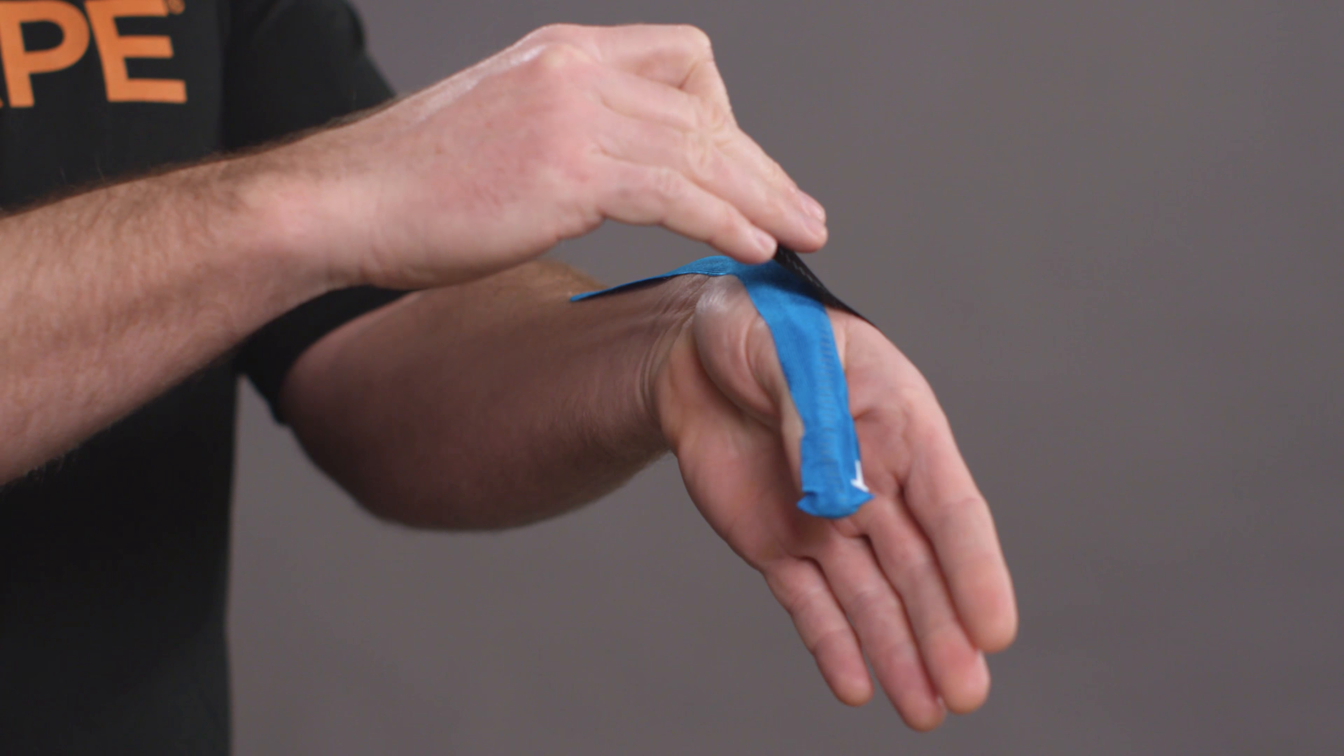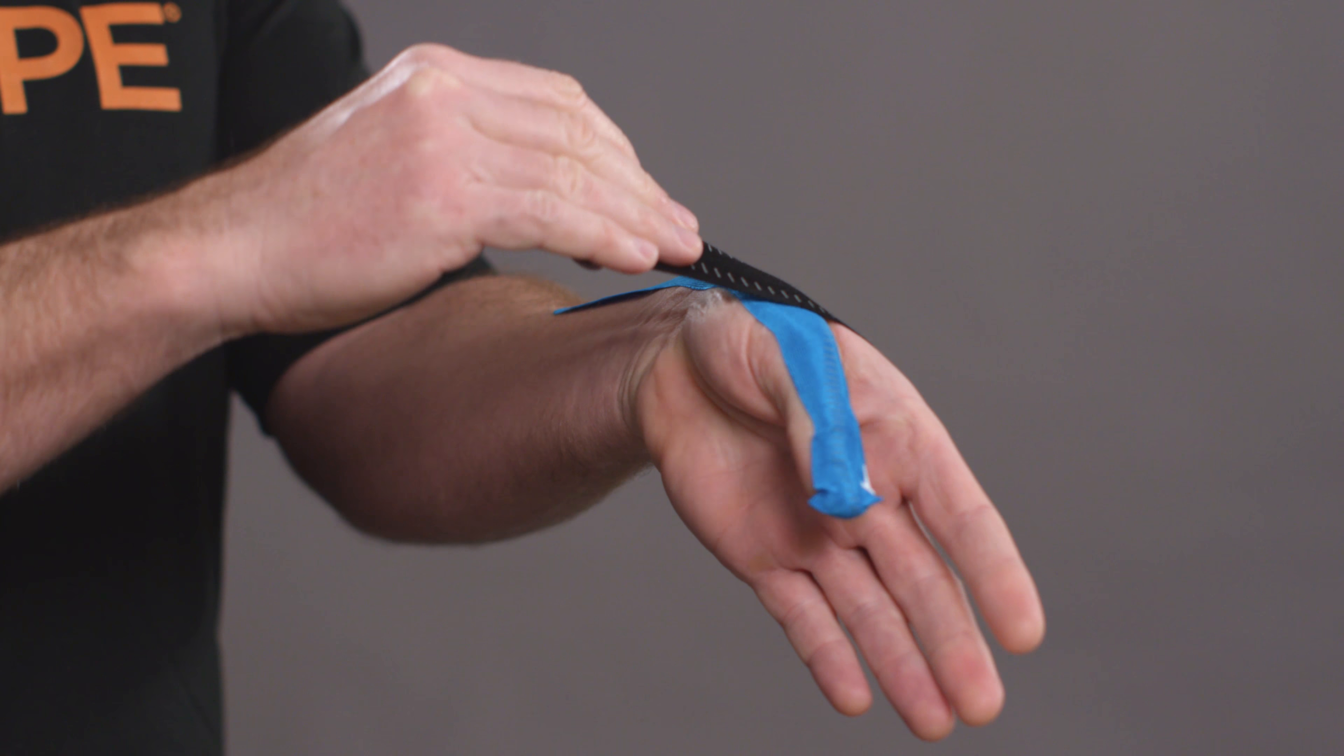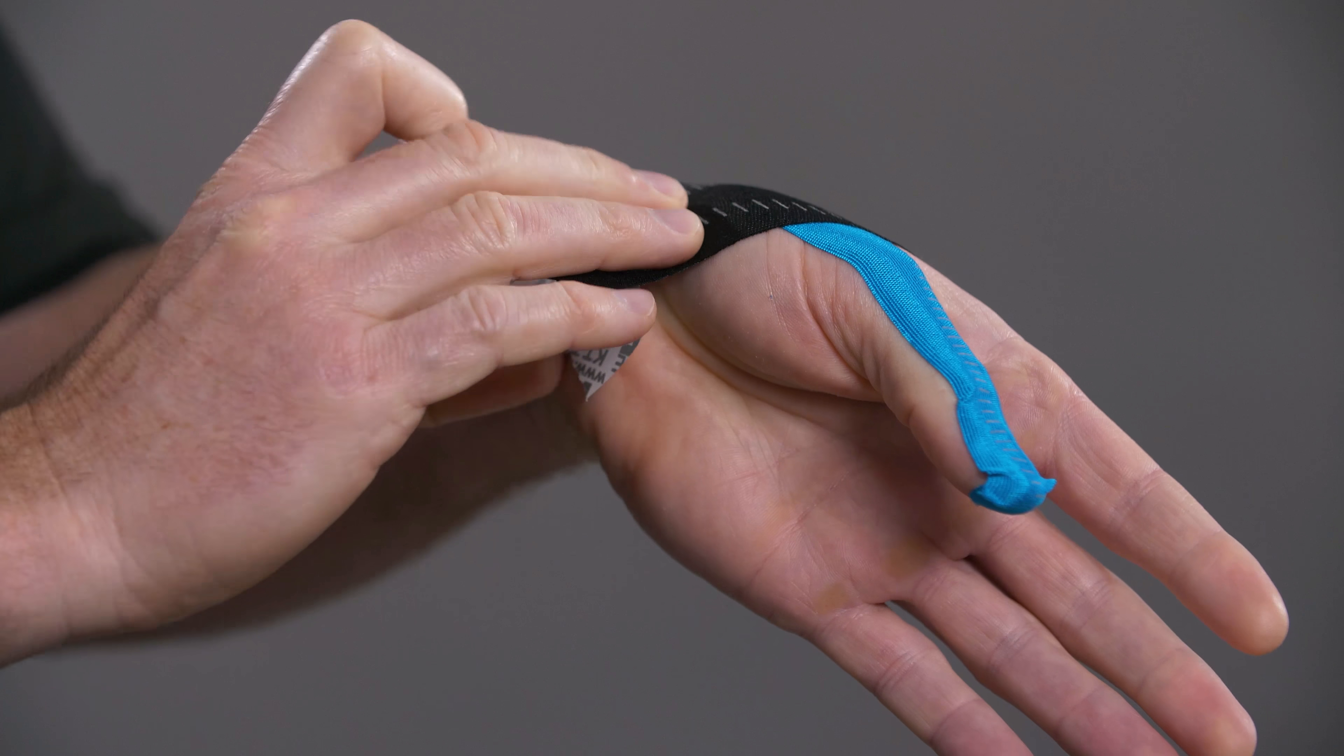While holding the anchor, apply a moderate stretch as you turn your palm up. Apply the last two inches with no stretch.